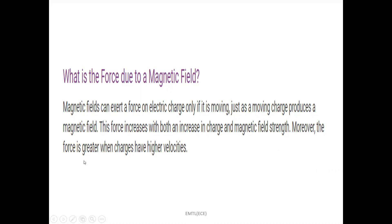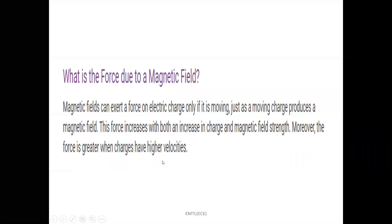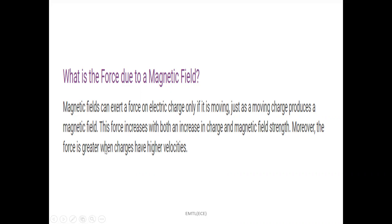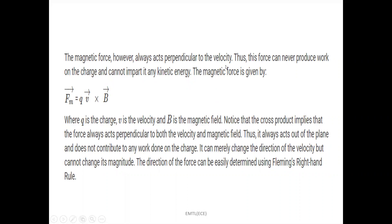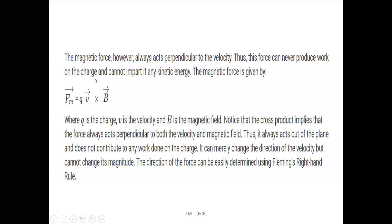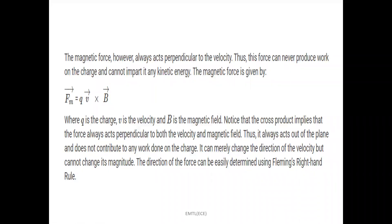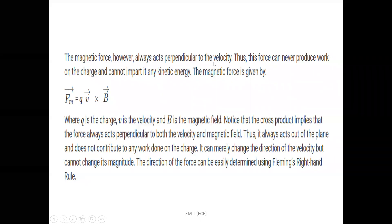The force is greater when the charge has higher velocity. That means the magnetic force is proportional to the velocity of the charged particle. The conclusion is the magnetic field is developed only when the electric charge is moving, i.e., it has a certain velocity; otherwise, the magnetic force value becomes zero. The magnetic force is always perpendicular to the velocity, and this force can never produce work on the charge and also cannot increase the kinetic energy of the particle.